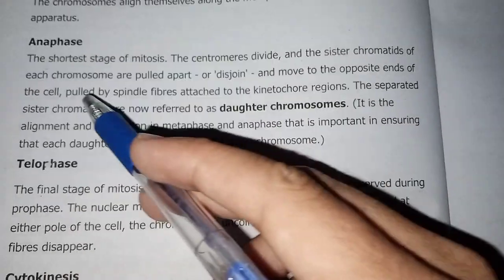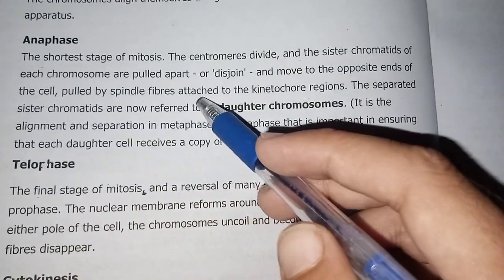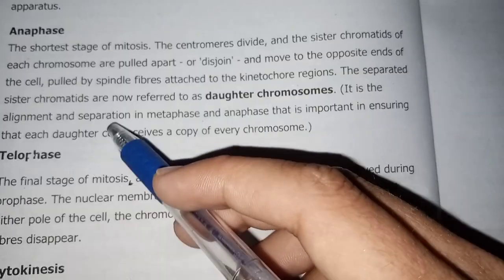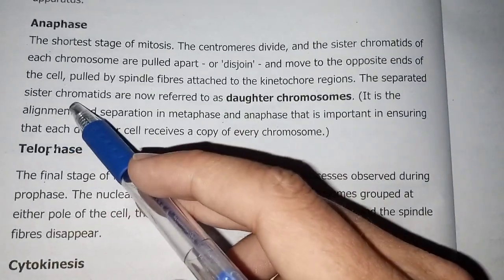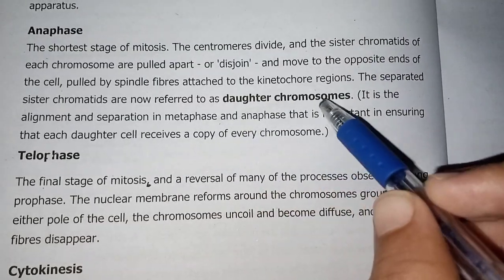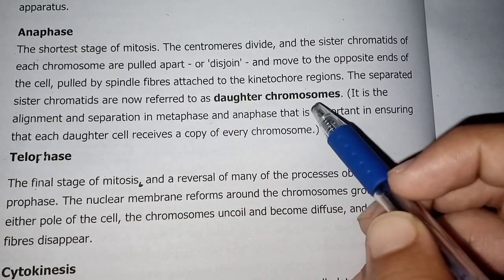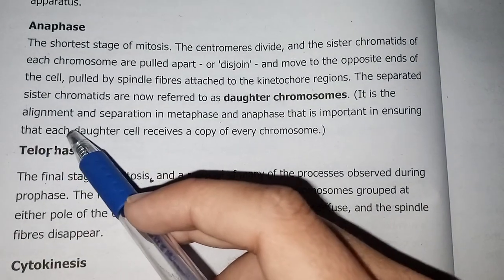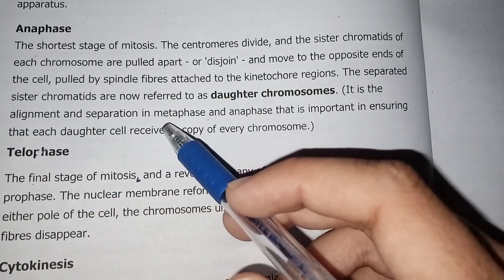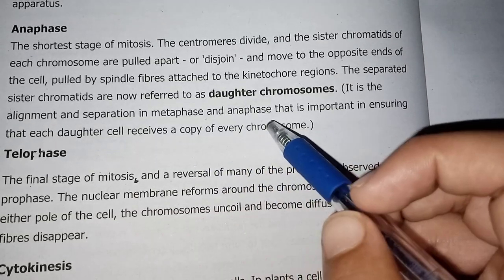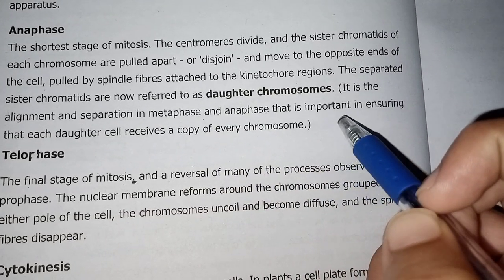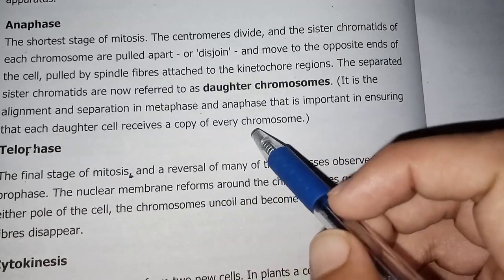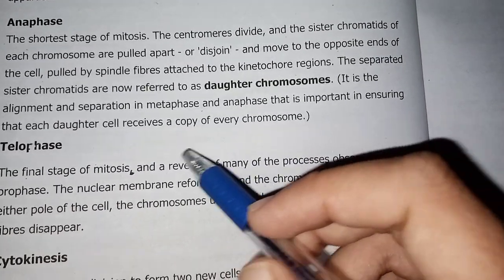In anaphase, the sister chromatids move to the opposite ends of the cell, pulled by spindle fibers attached to the kinetochore regions. The separated sister chromatids are now referred to as daughter chromosomes. Their separation in anaphase is important in ensuring that each daughter cell receives a copy of every chromosome.